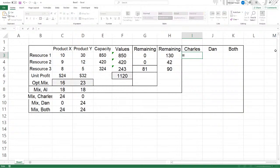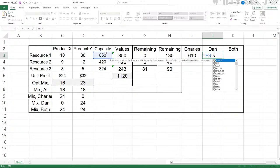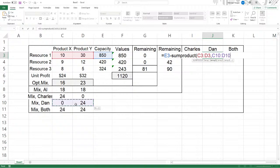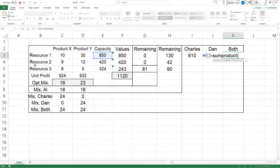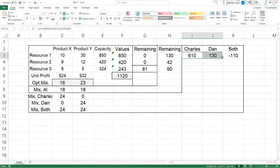We want the remaining. So that's going to equal the capacity minus the sum product of the coefficients here, the mix of Charles, which are these, F4 to freeze, and that's going to be the first one. Let's do Dan next. Equals the capacity minus the sum product of the coefficient of resource one times the mix of Dan this time, F4 to freeze. And then let's do both. Equals the capacity again minus the sum product of the coefficients times the mix of both, F4 to freeze, and there we have, right off the bat, there's negative. So if we bring this down, let's see what's going on here.